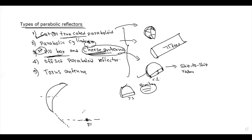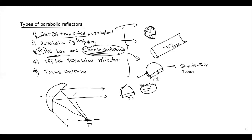In the Offset Paraboloid, the focus point is located outside the main reflector surface. Remember this point — the focus point is located outside. The focus point is used for receiving or transmitting signals, which reflect back from the surface. This is the key characteristic of the offset paraboloid.